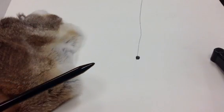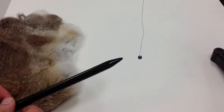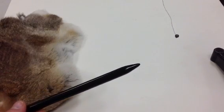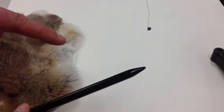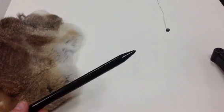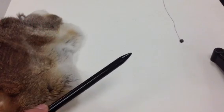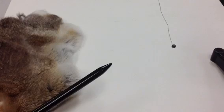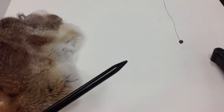So, if you watch very carefully, as you bring it closer, there's initially an attraction, and then repulsion after the transfer of electrons. The plastic rod transfers some of the electrons to that pith ball, and the pith ball now has a negative charge, and so they both repel each other.